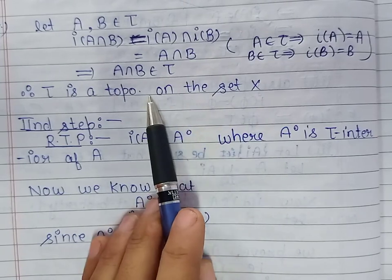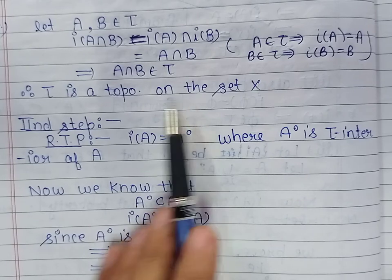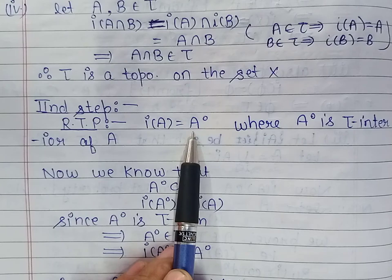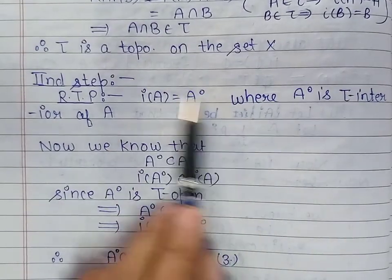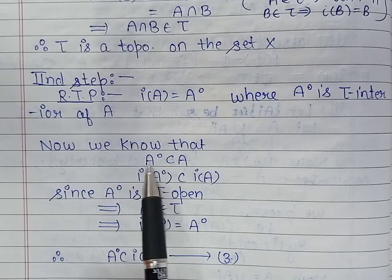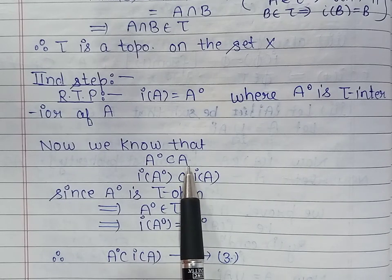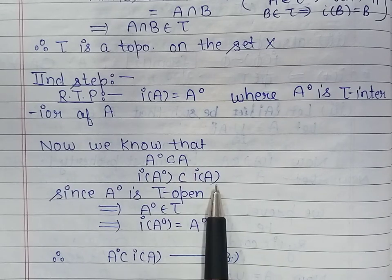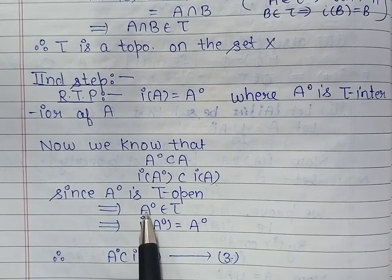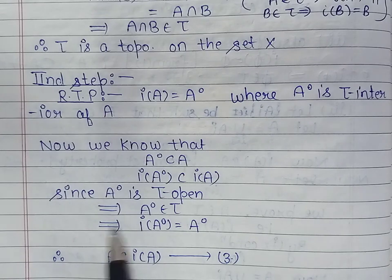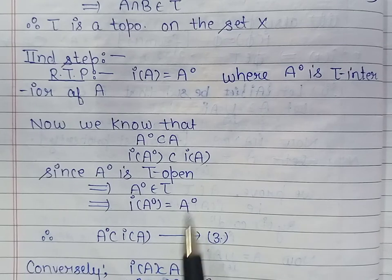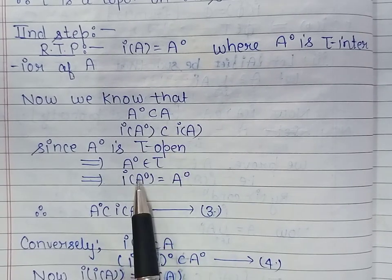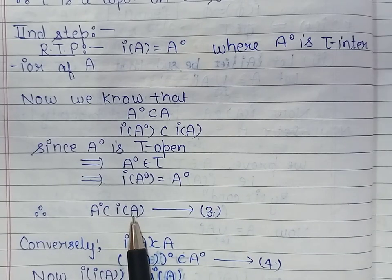We have proved the first step: obtaining a topology on set X. In the next step, we prove that I of A is the interior of the set A with respect to the topology τ. The interior A° is the largest open set contained in A, so A° is contained in A. Therefore I of A° is contained in I of A. Since A° belongs to τ, I of A° equals A°, and therefore A° is contained in I of A.